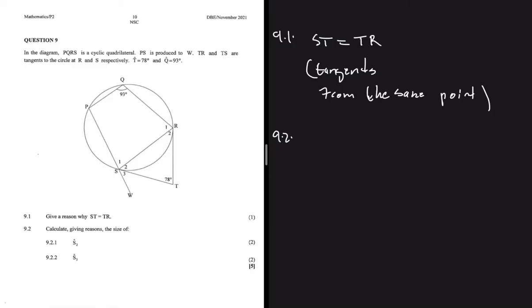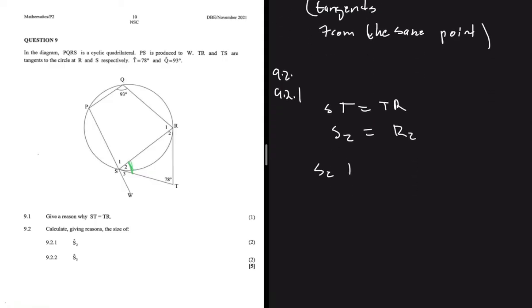Now we have 9.2.1 which says calculate the size of S2. This question follows the format where the first question helps answer the second. Because ST equals TR, then S2 equals R2. So S2 plus R2 plus T equals 180 degrees in triangle SRT.